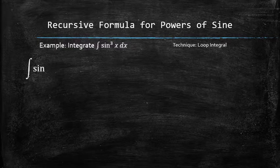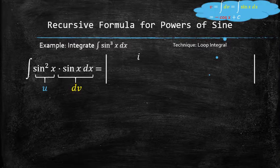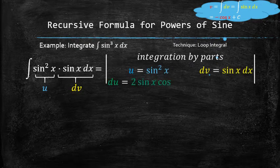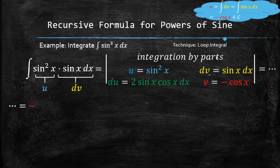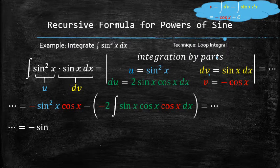We rewrite the integrand and choose u and dv, then integrate by parts by differentiating u to find du and integrating dv to find v. We apply the formula and combine the like terms to produce a new integral.